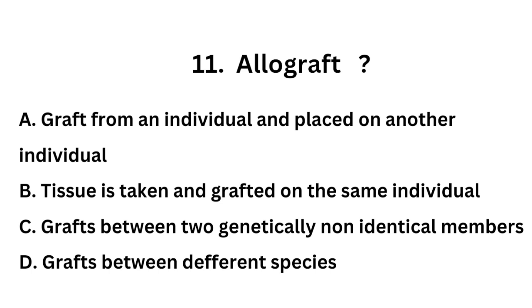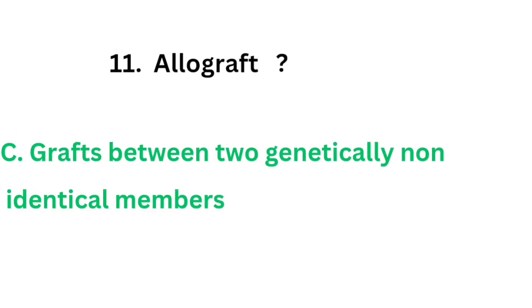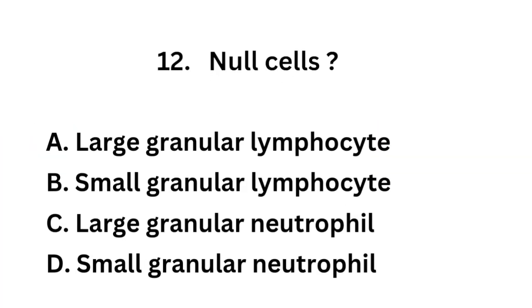Question 11. Allograft: Option A, Graft from an individual placed on another individual; Option B, Tissue taken and grafted on the same individual; Option C, Grafts between two genetically non-identical members; Option D, Grafts between two species. The correct answer is Option C, grafts between two genetically non-identical members.